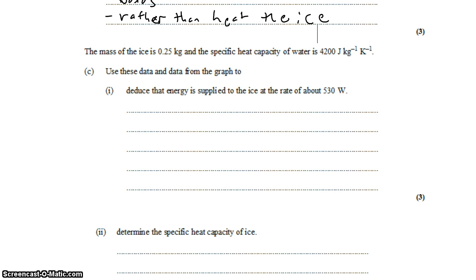The mass of the ice is a quarter of a kilogram. And the specific heat capacity of water is 4,200 joules per kilogram per kelvin. Use this data and the data from the graph to deduce that the energy supplied to the ice is at a rate of about 530 watts. Well, we know that we can calculate the energy input into the ice, Q. That's mc delta t.